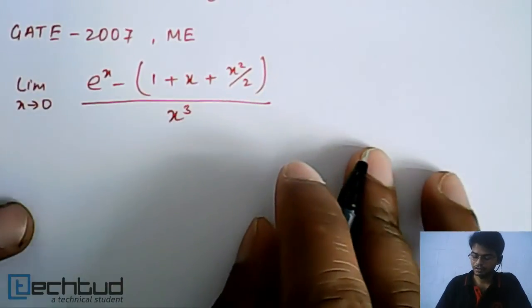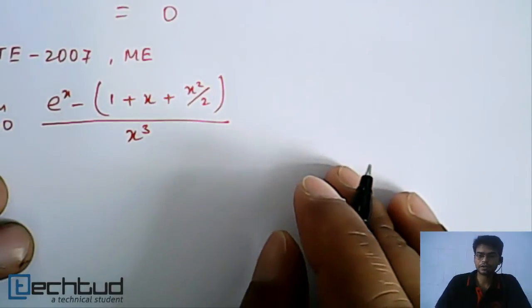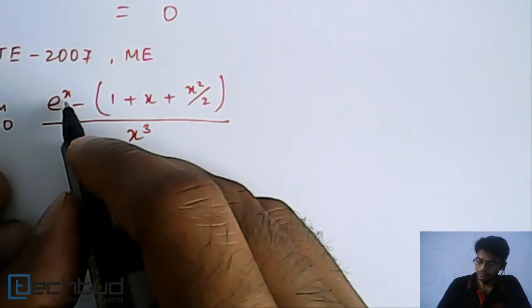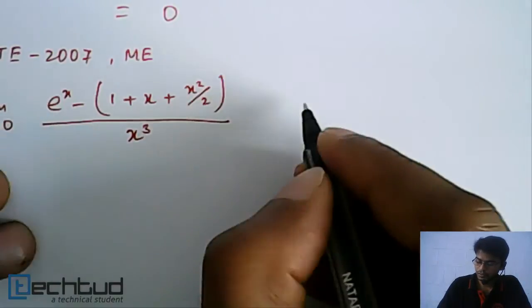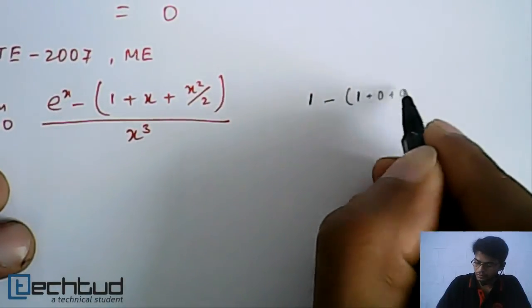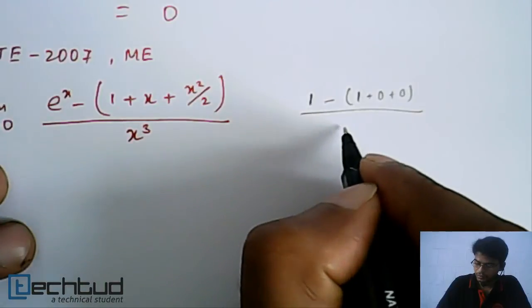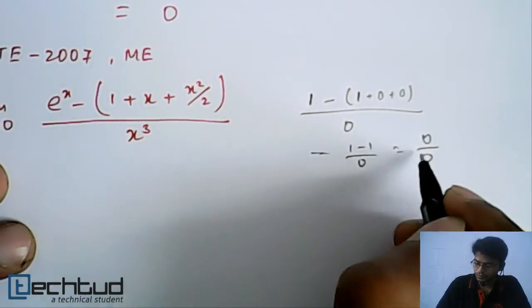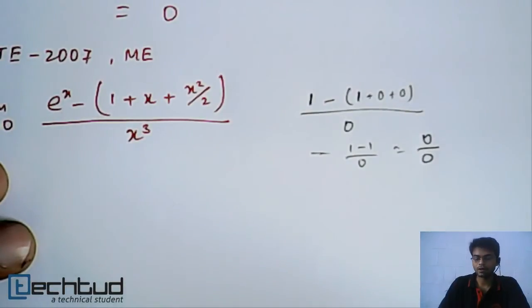First of all, we will check whether it is 0 by 0 or infinity by infinity form. So if we put e to the power 0, this is equal to 1, 1 minus 1 plus 0 plus 0 upon 0, this equals 0. So this is 1 minus 1 upon 0 equal to 0 by 0 form. So now we can apply L'Hospital's rule here.